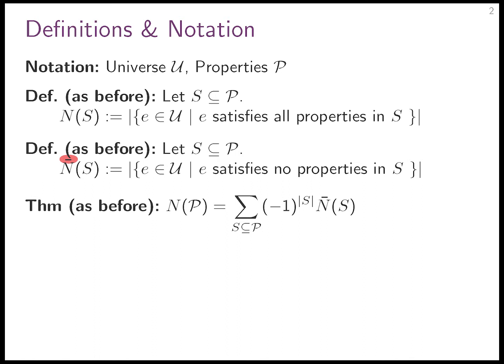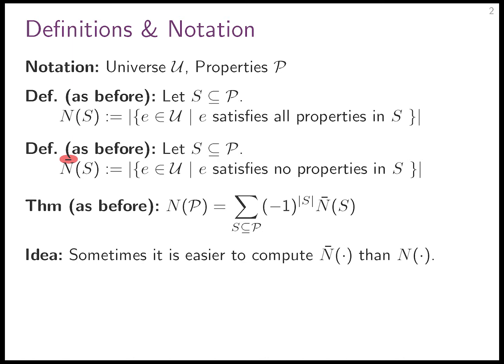Let's recall what we had. Last week we had the theorem that these two things relate through the inclusion-exclusion theorem, which says that N(P) equals the sum over all subsets of N̄(S), where each term is either positive or negative depending on the cardinality of the subset. Why would you ever do this? Why relate something you want to exponentially many other things? Well, maybe N̄(S) is easier to calculate than N(P). The algorithm design challenge is recognizing situations where this is the case — you would only do it if it's actually simpler.